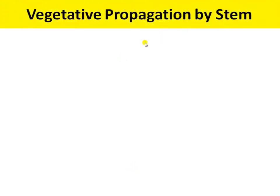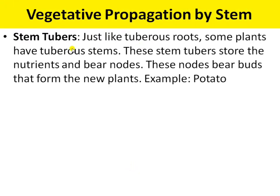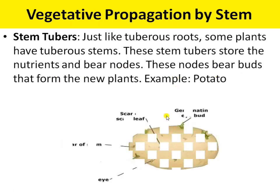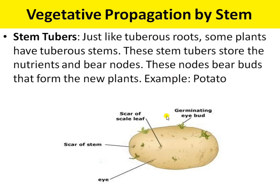Next is vegetative propagation by stem. Just like tuberous roots like sweet potato, some plants have a tuberous stem. These stem tubers store nutrients and bear nodes. These nodes bear buds that form new plants — for example, potato. In vegetative propagation by stem, many plants like rose, china rose, and potato can easily be grown by stem cutting.